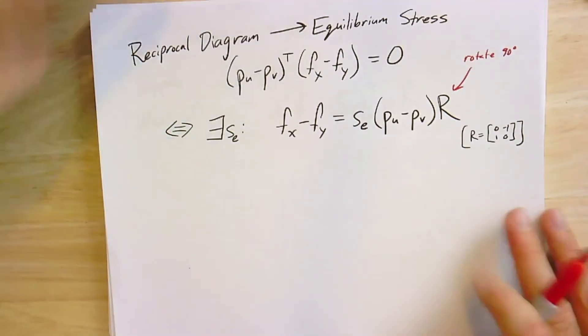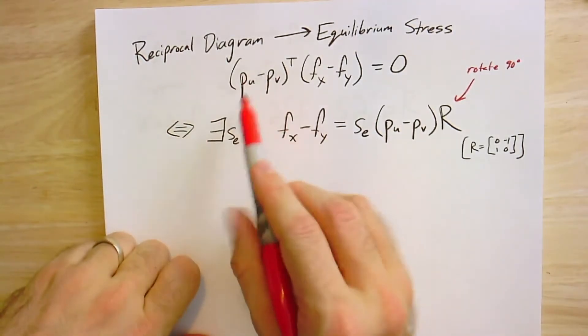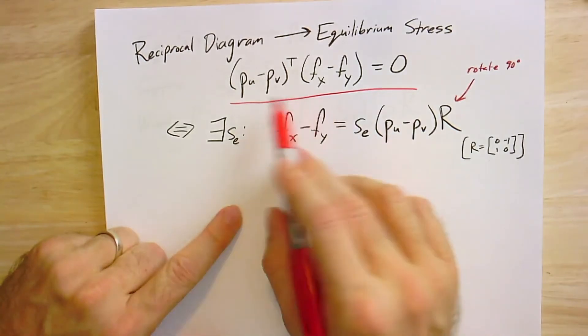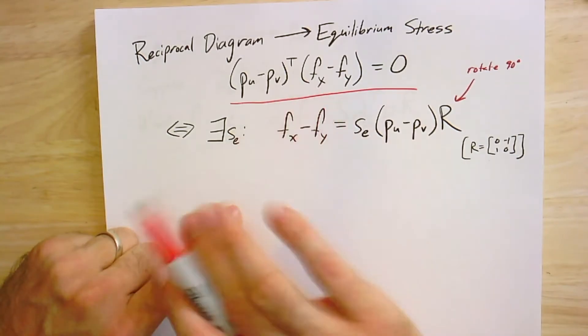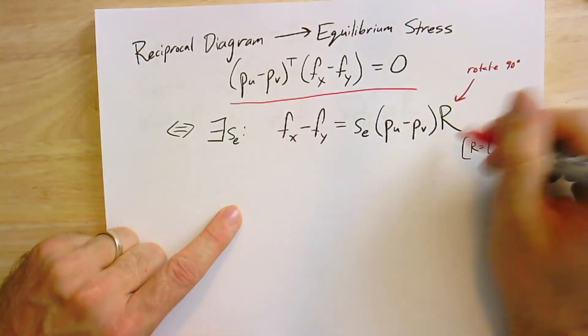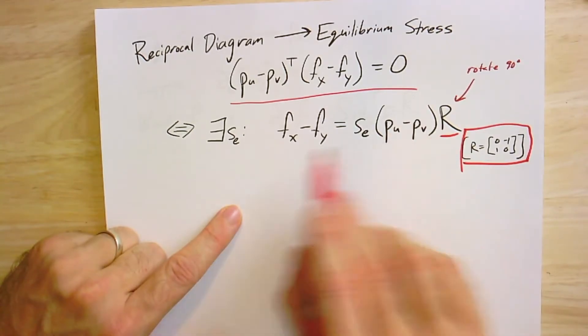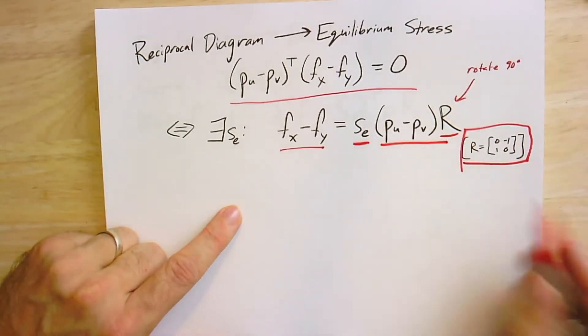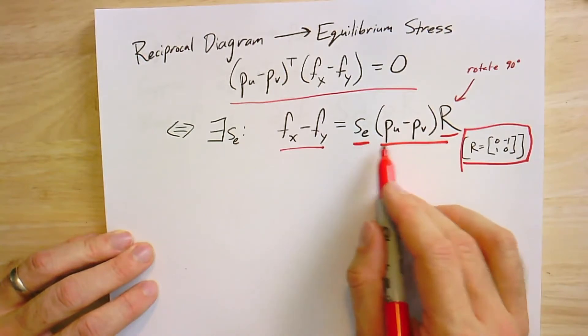So from a reciprocal diagram, we can get an equilibrium stress. Here's the idea. So if I have the reciprocal diagram, this is the condition that I must have had at every edge. So for a given edge, in other words, if these are orthogonal to each other, then if I rotate one of them by 90 degrees, then they'll be parallel. Okay. So I'll take a rotation matrix. If you haven't seen it, there's a matrix that will do a 90 degree rotation. And I'll rotate this Pu minus Pv. And it must be then that this vector is some scaling times this vector. Alright. So I rotated this and now they're parallel. And the question is, how much longer is one than the other?